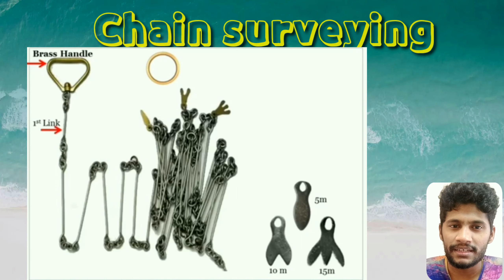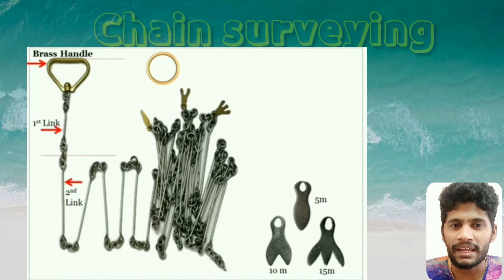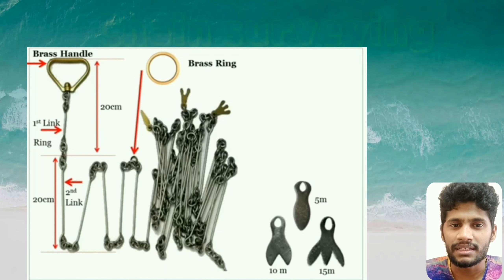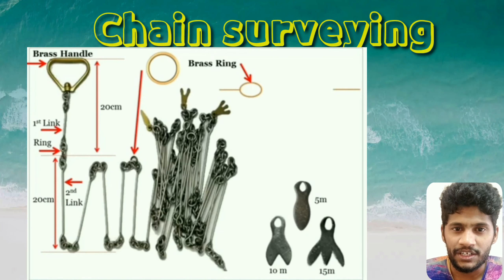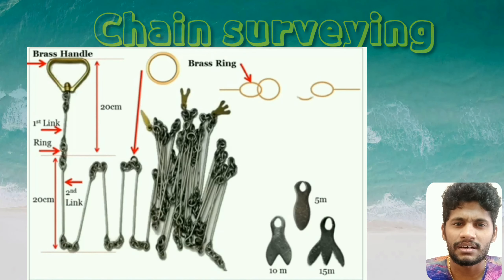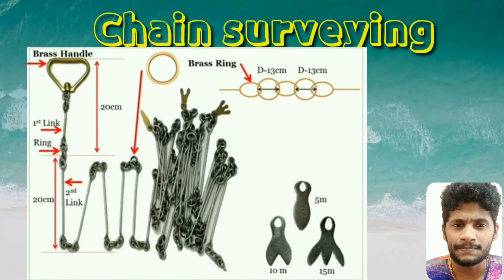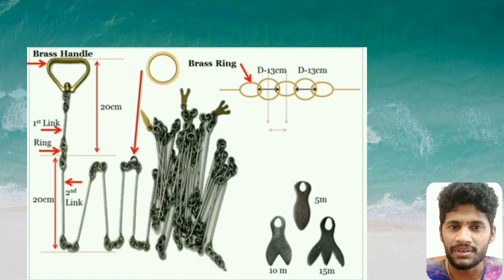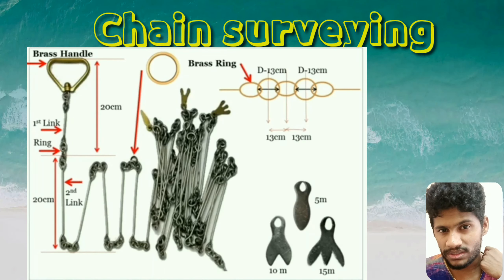This is a 20-meter metric chain with brass handles at both ends. The first link and the last link are connected with the brass handles. It has a total of 100 links, with each link having a length of 20 cm. Brass rings are used for connecting two links, and at every 5-meter interval there are 5 brass rings with a diameter of 13 cm. Tallies are placed at 5, 10, and 15-meter intervals, with a number representation of 1, 2, and 3.